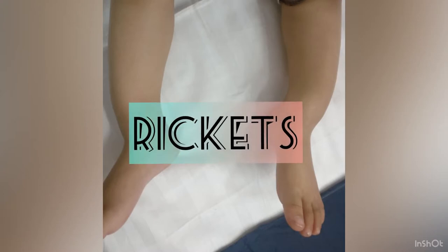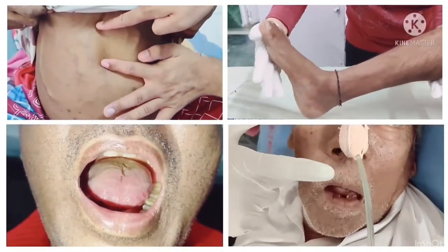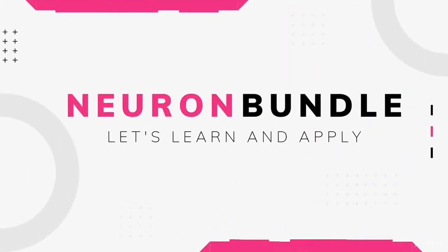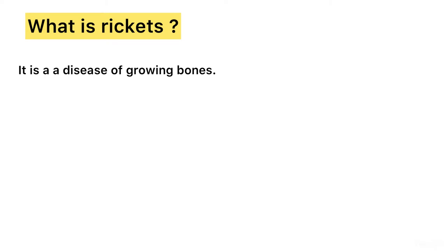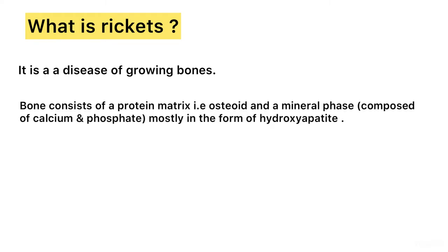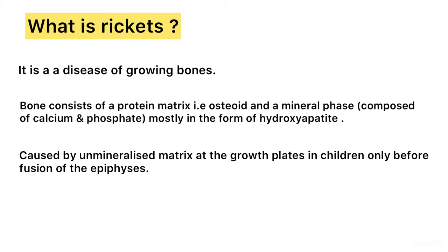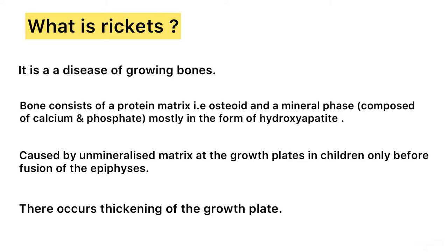Hello friends, today we will talk about clinical features of Rickets. It is a disease of growing bones. Normally, bone consists of a protein matrix that is osteoid and a mineral phase which is composed of calcium and phosphate, mostly in the form of hydroxyapatite. Rickets is caused by unmineralized matrix at the growth plate in children, only before fusion of the epiphysis.